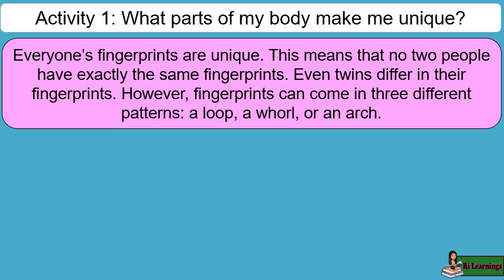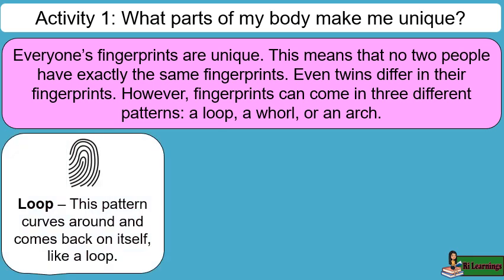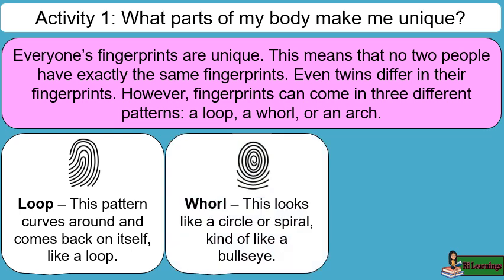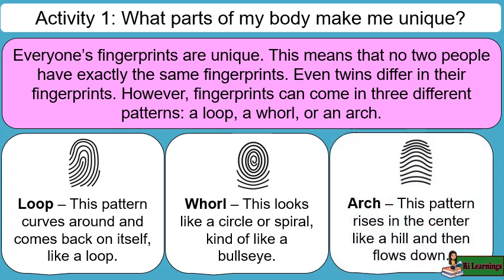Even twins differ in their fingerprints. However, fingerprints can come in three different patterns. Loop: This pattern curves around and comes back on itself, like a loop. Whorl: This looks like a circle or spiral, kind of like a bullseye. Arch: This pattern rises in the center like a hill and then flows down.